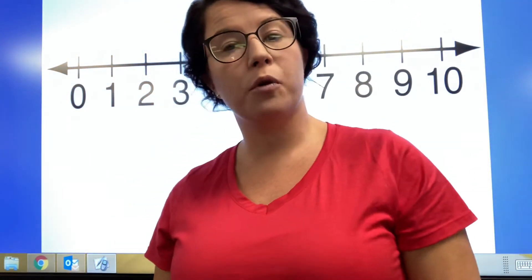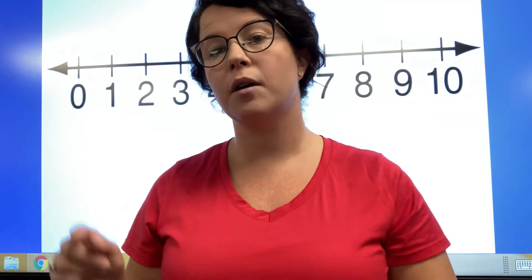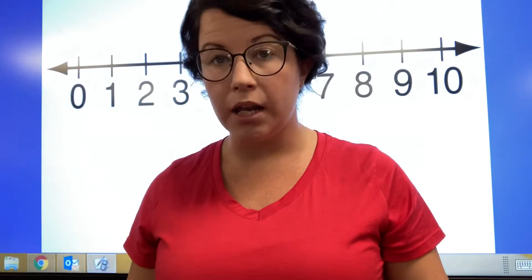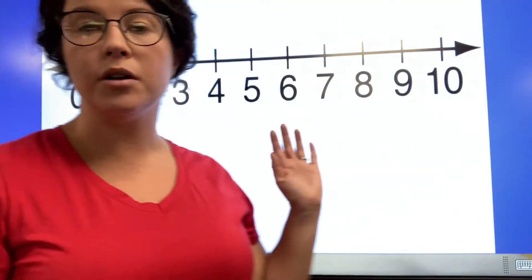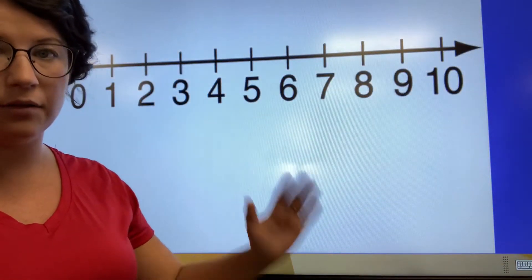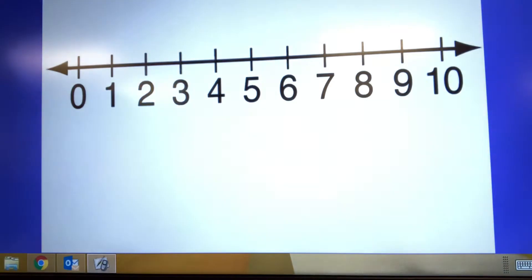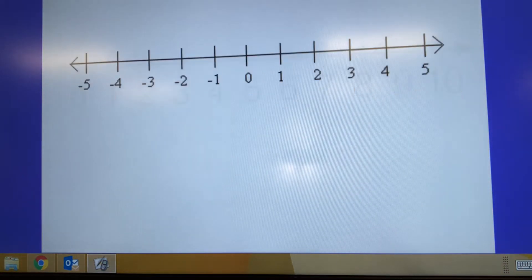But today we're going to focus on the difference between a positive number and a negative number on a number line. So here we've got 0 to 10, so all of these numbers are positive on our number line. I've got to go over here to my side and click on my button, so bear with me.